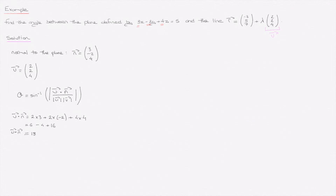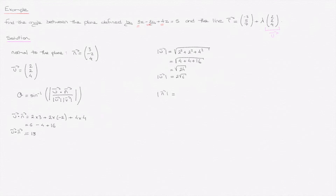Now we need the magnitudes of u and n. The magnitude of u is the square root of 2 squared plus 2 squared plus 4 squared, which is the square root of 4 plus 4 plus 16, equal to the square root of 24, or 2 root 6. The magnitude of n is the square root of 3 squared plus negative 2 squared plus 4 squared, giving us the square root of 9 plus 4 plus 16, which is root 29.